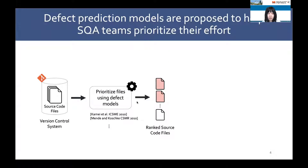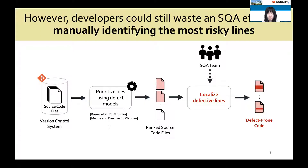As a result, defect prediction models are proposed to help SQA teams prioritize their efforts by analyzing prior software defects that occurred in the previous release. Clearly, defect prediction models have been developed at different granularity levels, for example, package, component, files, and methods. However, developers could still waste SQA effort manually identifying the most defective lines, since the current prediction granularity is still perceived as coarse-grained.